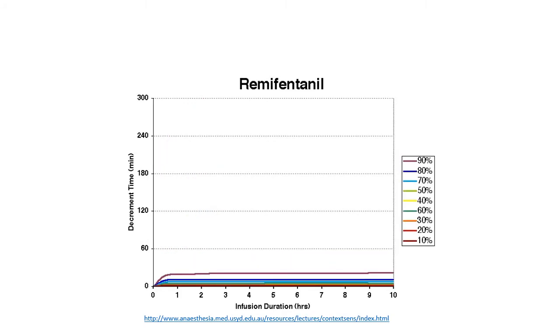Here we see this flattening of the curves to an even greater degree with remifentanil. I don't think anything better illustrates how different fentanyl, alfentanil, and remifentanil are with respect to their kinetics than this set of graphs.